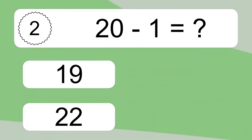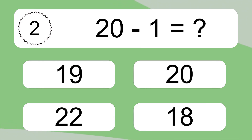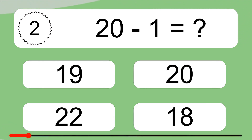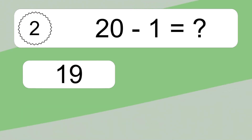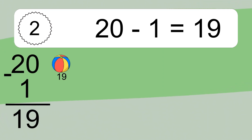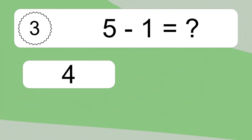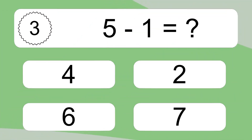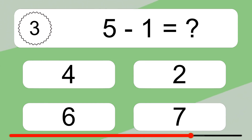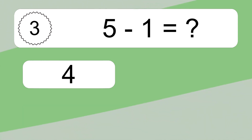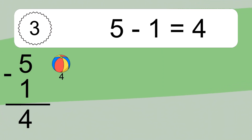20 minus 1 equals what? 20 minus 1 equals 19. Let's count it: 19. 5 minus 1 equals what? 5 minus 1 equals 4.